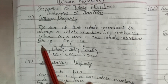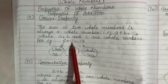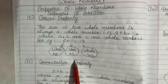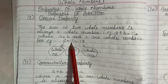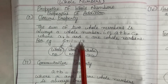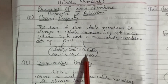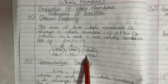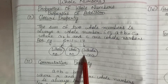For example, I have taken 6 plus 11. 6 is a whole number, 11 is also a whole number. And on adding them, I will get 17 which is also a whole number. So, hopefully, closure property for addition is clear to you.